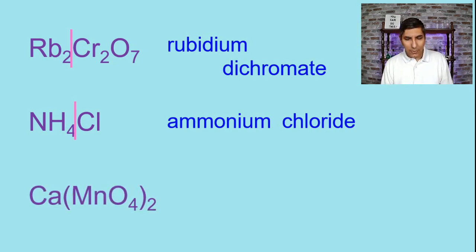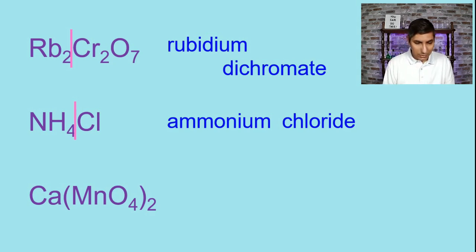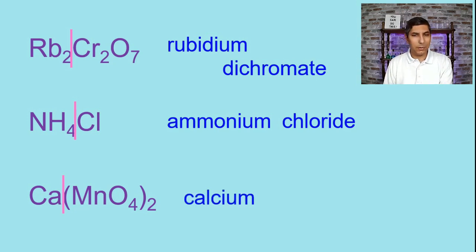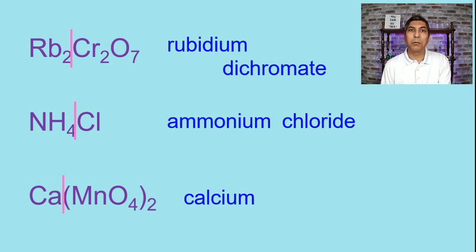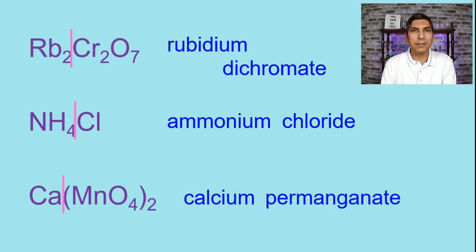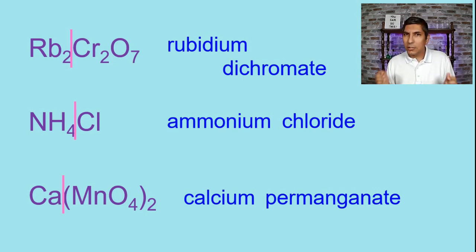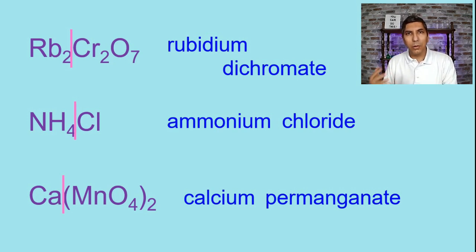We have Ca(MnO4)2. Split this right down the middle — Ca is going to be calcium. And MnO4 is on the ion chart; it's a polyatomic ion with the name permanganate. So calcium permanganate is the name of this ionic compound. We have several examples here, and it seems pretty easy if you've been following along and learning the names of these polyatomic ions.